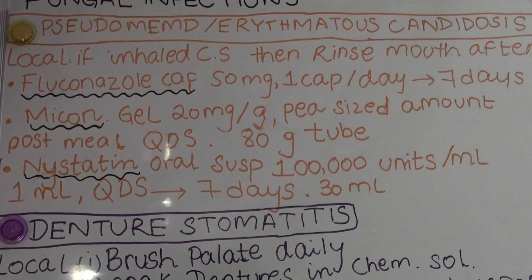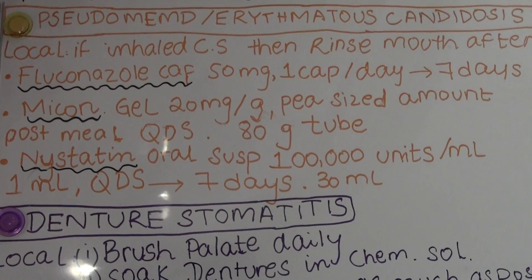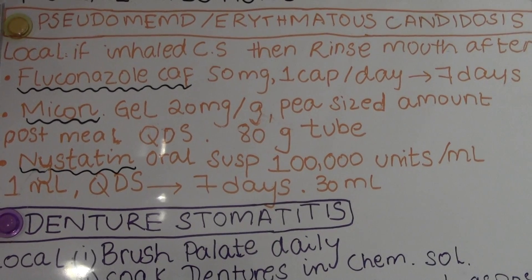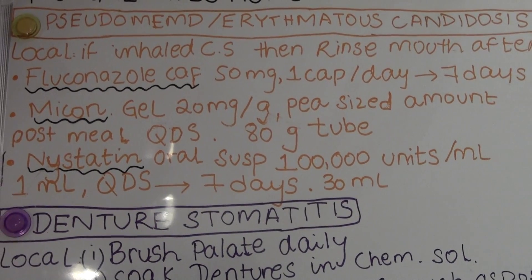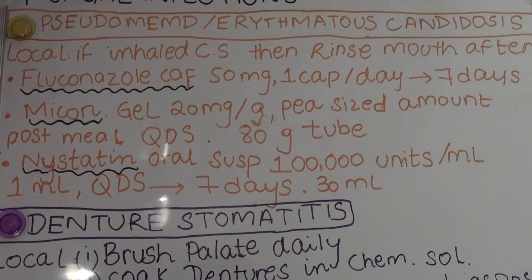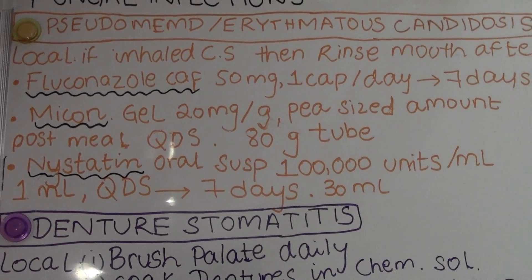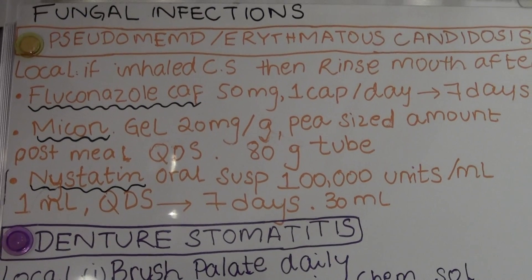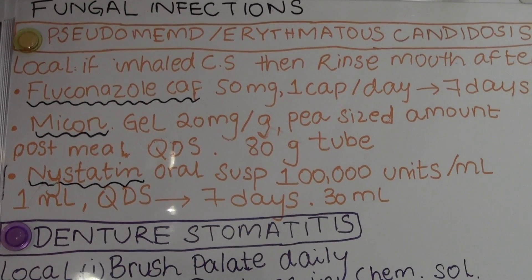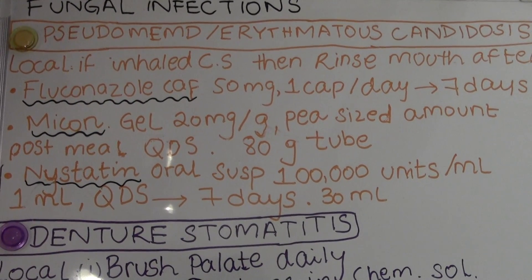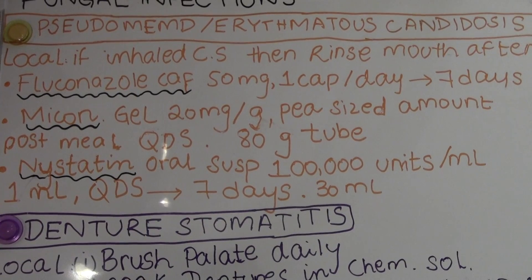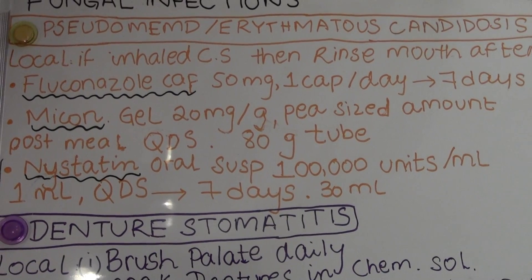Miconazole can be given as a gel, 20 milligrams per gram. A pea-sized amount is to be applied after meals, four times a day, and we dispense an 80 gram tube.